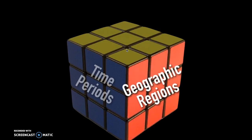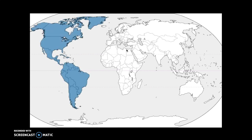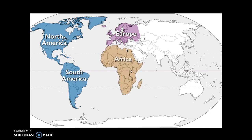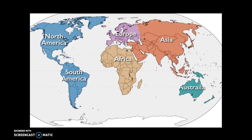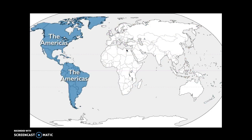We can also break down world history into various geographic regions. You may have studied the seven continents when you were younger — North America, South America, Europe, Africa, Asia, and Australia. But you're going to have to sort of forget all of that for the most part when you take AP World History, because the divisions we're going to establish are a little bit different.